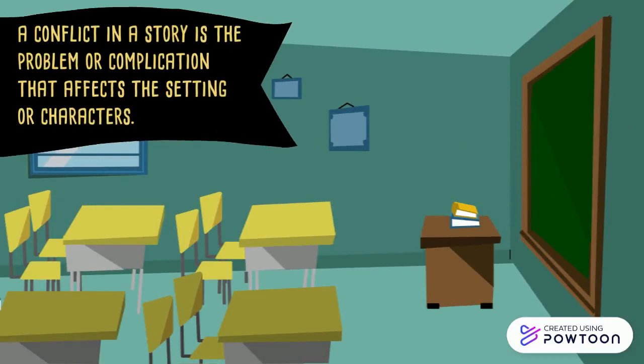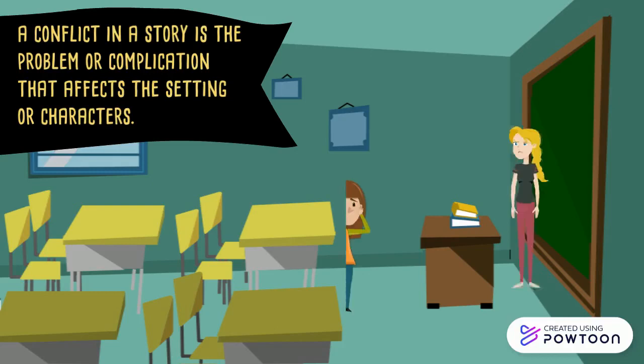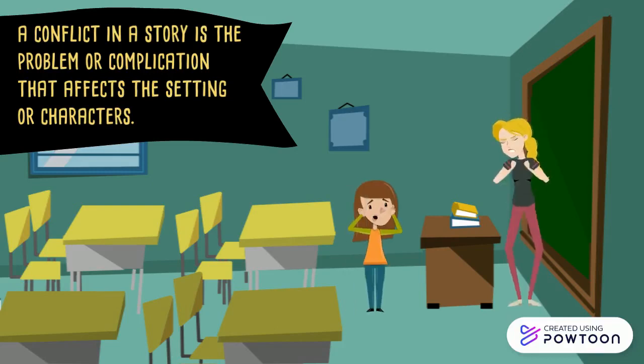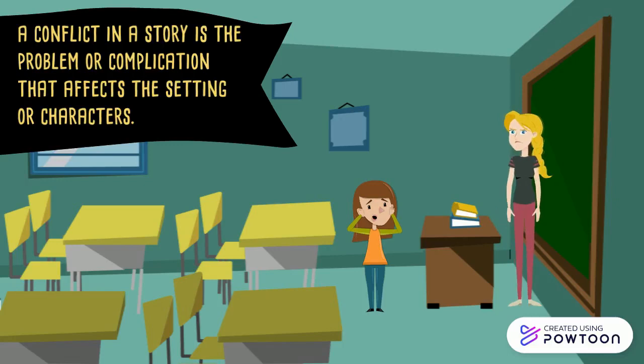What is a conflict? A conflict in a story is the problem or complication that affects the settings or characters. For example, my teacher burst into anger as I didn't do my homework. Now, this is a serious problem in the story.